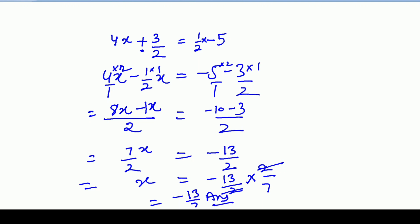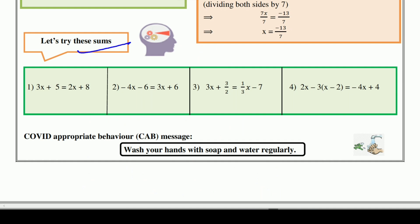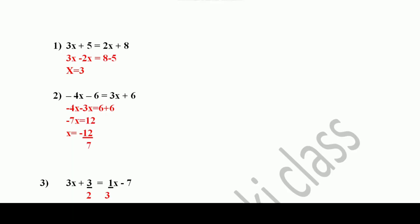Let's try these practice sums. First question: 3x + 5 = 2x + 8. Wohi bataya tha — x ko left side per, without x ko right side per. Jab ye plus ka 2x saamne jayega, minus ka ban jayega: 3x minus 2x. Aur ye plus ka 5 saamne jayega to minus ka ban jayega: 8 minus 5. So 3x - 2x = x = 1x, aur 8 - 5 = 3. X ki value 3 is your answer.